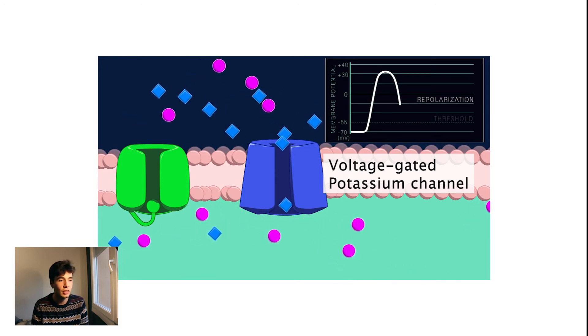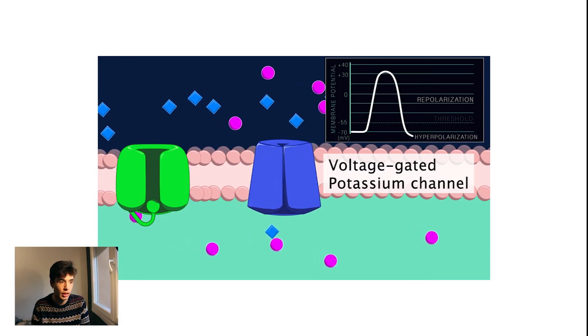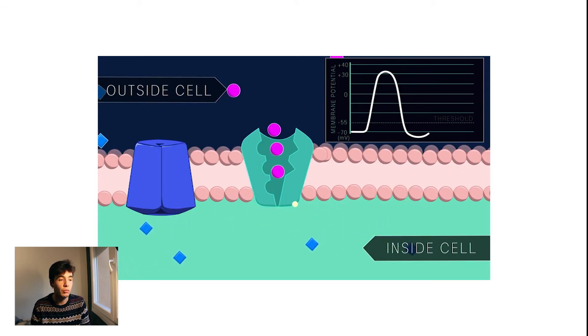Thanks to that, the voltage of the neuron decreases to reach the voltage below minus 70 millivolts. And it is then the job of the sodium potassium pump channels, which I'm not going to go deep into, that restore the normal voltage of the neuron of minus 70 millivolts.